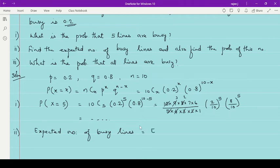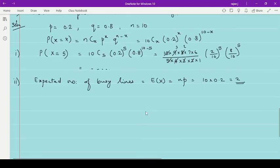means expectation of x we need to find which is equal to n into p. So n is 10, p is 0.2, so that is 2. So 2 will be always busy there.